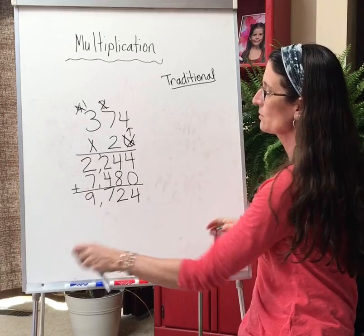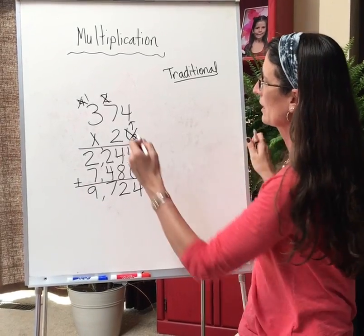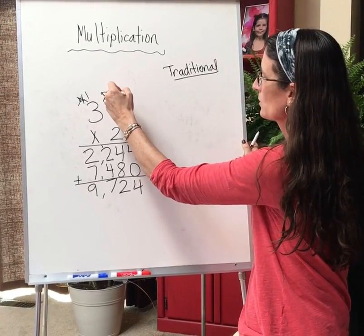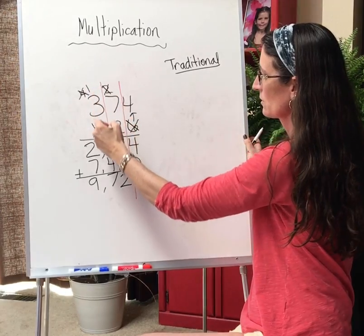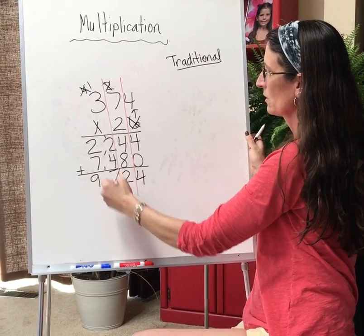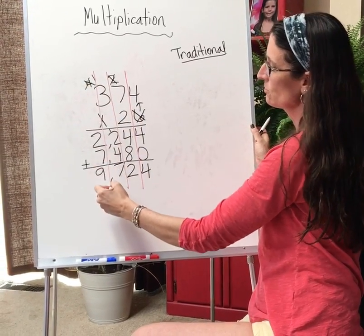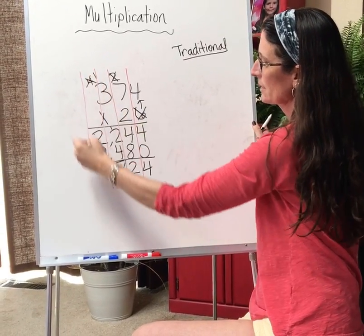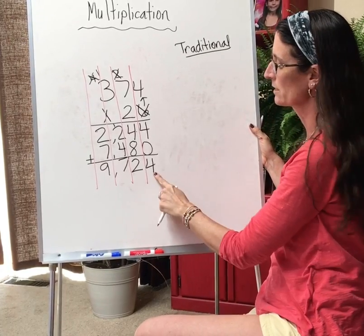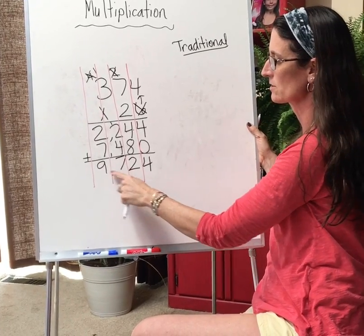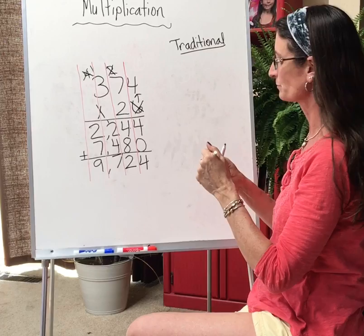Something really important to keep in mind is when you are writing all of your information, you need to make sure that you keep everything in the correct column for 1s, 10s, 100s, and 1000s. So I'll do one more.